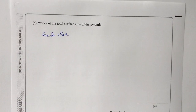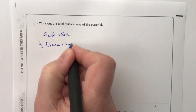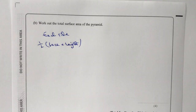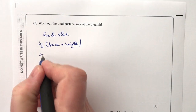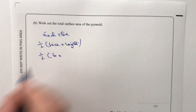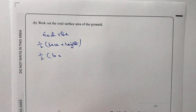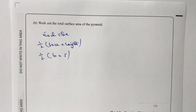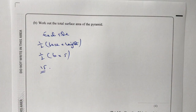Each side is the area of a triangle: a half times base times height. Going back to the diagram, the base is six. You've got to be very careful because the height here is the slant height, not the vertical height of the overall pyramid which was four — the slant height of the triangle is five. So half times six times five: six times five is 30, and half of 30 is 15. Each triangular side is 15.